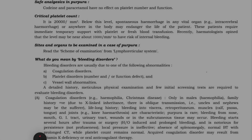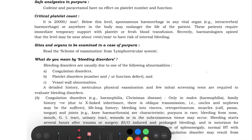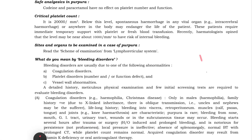Continuing our discussion - part 2 of hemorrhagic spots. We'll see what are the safe analgesics we can give. We have codeine and paracetamol. They are safe; they do not affect the platelet number and function. So codeine and paracetamol are safe for patients with low platelets.